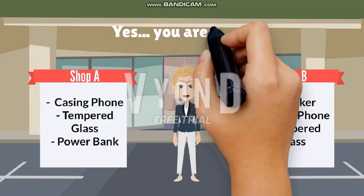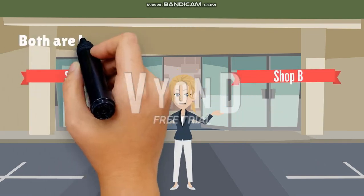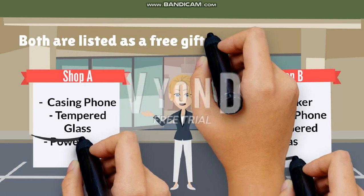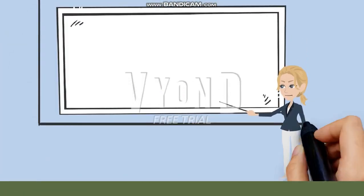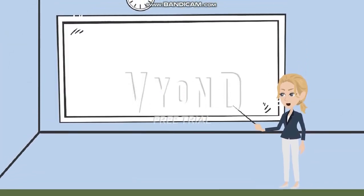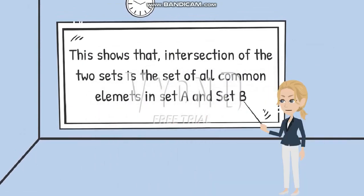Yes, you are right. Both are listed as our free gift for Shop A and Shop B. This shows that the intersection of the two sets is the set of all common elements in set A and set B.